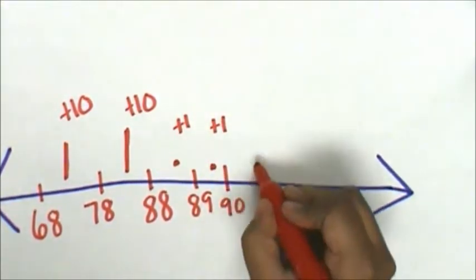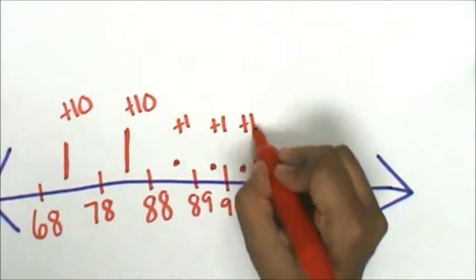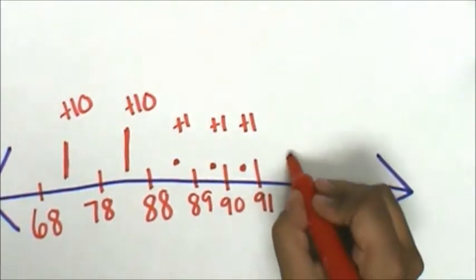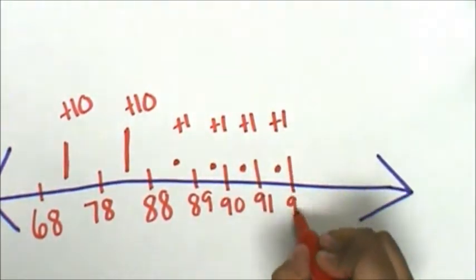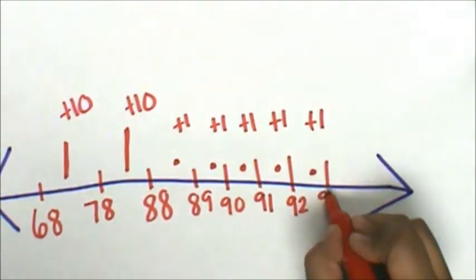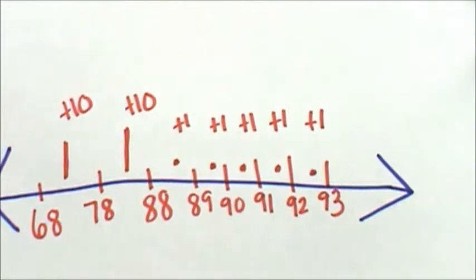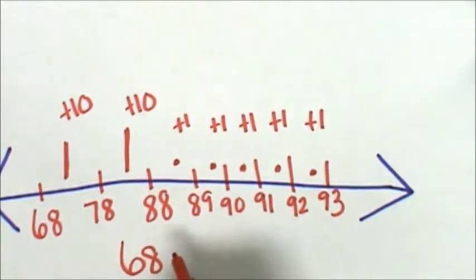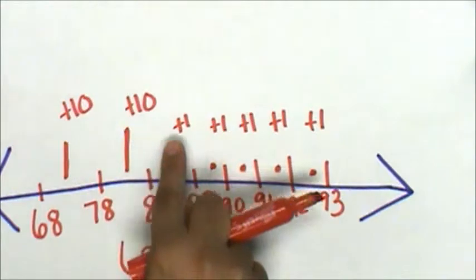that's 90, here's a 1, 91, another 1, 92, and another 1, 93.